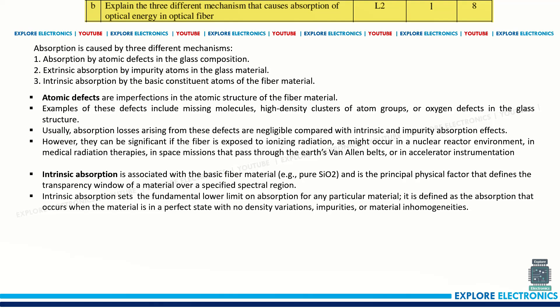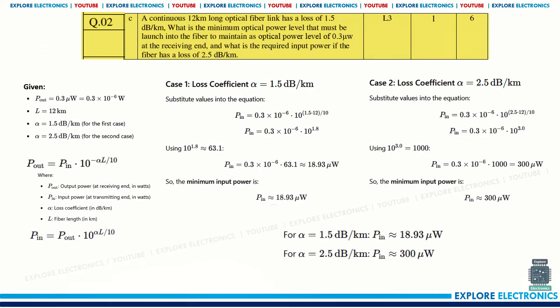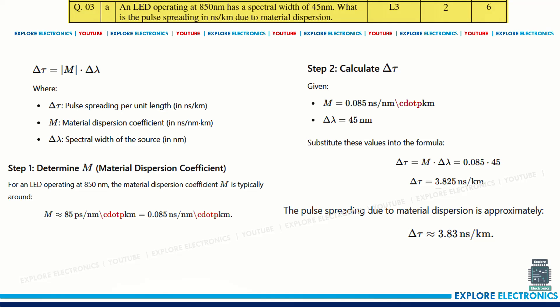Then explain the three different mechanisms that cause absorption of optical energy in an optical fiber. Absorption is caused by atomic defects in the glass composition itself, or extrinsic absorption by impurity atoms in the glass material, or intrinsic absorption due to the basic constituent atoms of the fiber material. Briefly explain these — it carries eight marks. This problem is also covered in a previous video.